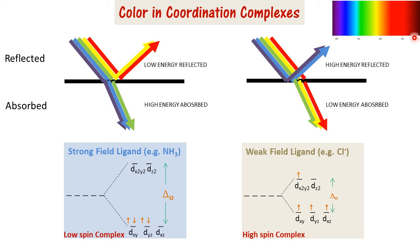Low spin complexes will generally appear in colors like red, yellow, green, etc. On the other hand, weak field ligands have low splitting energy. When light falls on them, the low energy wavelengths are absorbed and the high energy wavelengths are reflected back. This is why high spin complexes are seen as blue or violet, corresponding to the high energy wavelengths reflected.